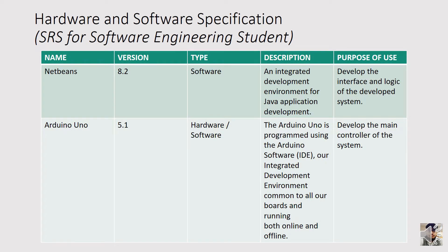The next section is hardware and software specification. For software engineering students, you have to write this in your SRS. It is about the hardware and software you use in your project. Using Microsoft Word to write your document or a printer to print it is not considered as hardware or software for this section — it is specifically about what you use to develop your solution.